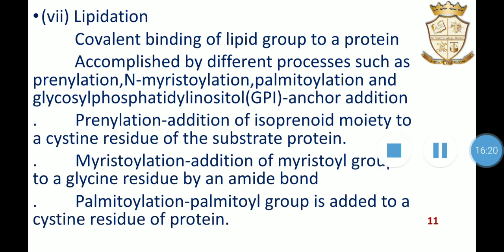Nitrosylation is a covalent incorporation of a nitrosyl moiety of NO into another molecule. It is a physiologically important post-translational modification that affects a wide variety of proteins involved in a number of cellular processes. When nitrosylation takes place at a transition metal, for example at the catalytic site of metalloenzymes, it is termed metal nitrosylation. S-nitrosylation is a ubiquitous regulatory mechanism for protein conformational change, protein-protein interactions, and further post-translational modifications such as phosphorylation, acetylation, ubiquitination, and disulfide bond formation.